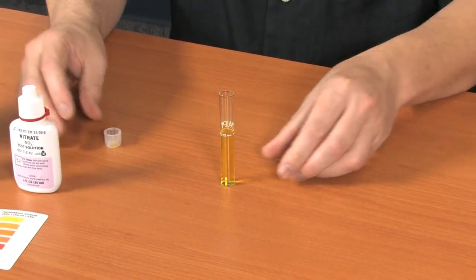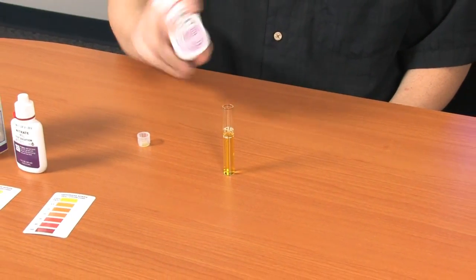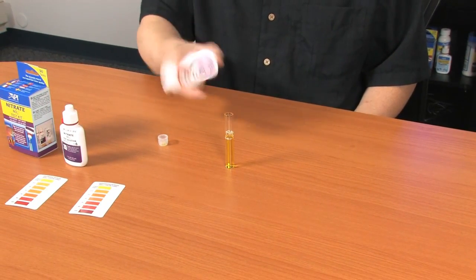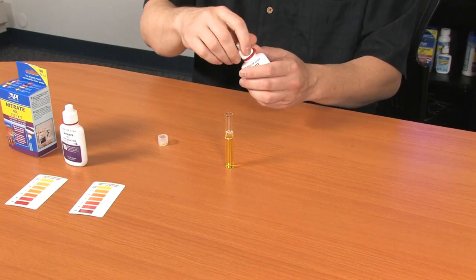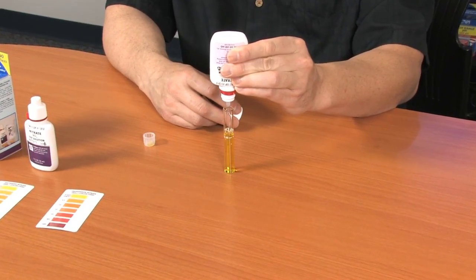Now shake bottle number two for a full 30 seconds. Bottle number two contains a suspension of test chemicals. It is critical that bottle number two is shaken for a full 30 seconds to re-suspend the chemicals. If not properly shaken, test results will be inaccurate.